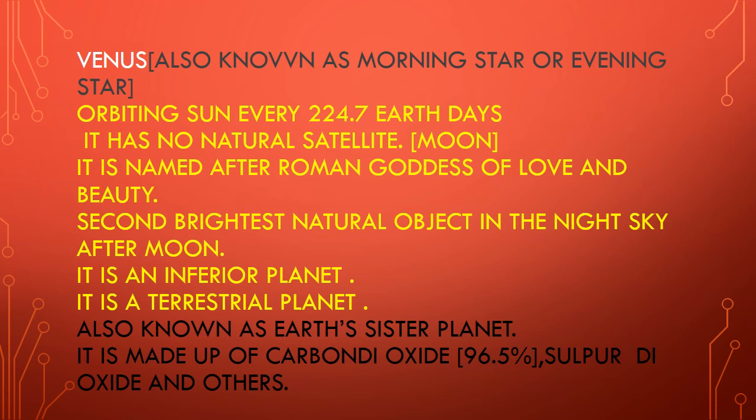Mercury and Venus don't have a moon — they don't have any natural satellite. So the next planet is Venus. Venus is the morning and evening star — this is a very important question. Venus orbits the Sun every 224.7 days. Venus also has no natural satellite or moon.